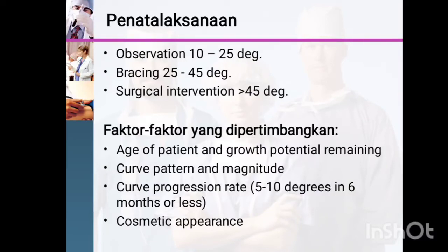The determining factors of treatment are the age of the patient and remaining growth potential — treatment differs for children, adolescents, and adults. Other factors include curve pattern, curve magnitude, progression rate (5 to 10 degrees in six months or less), and cosmetic appearance.